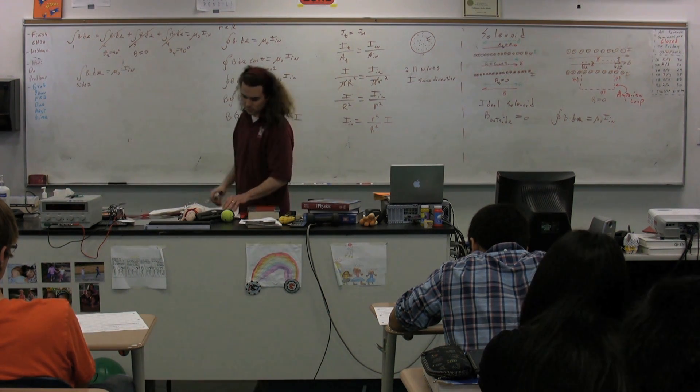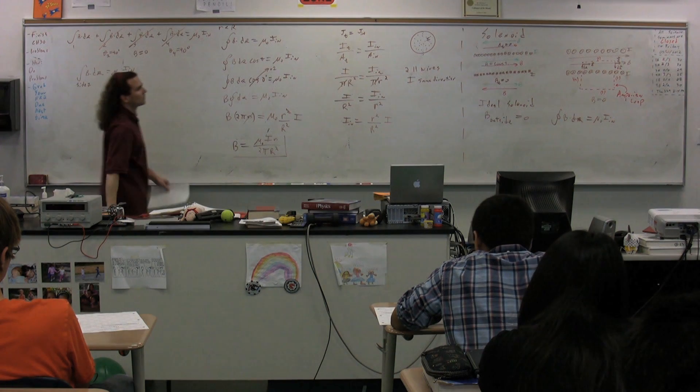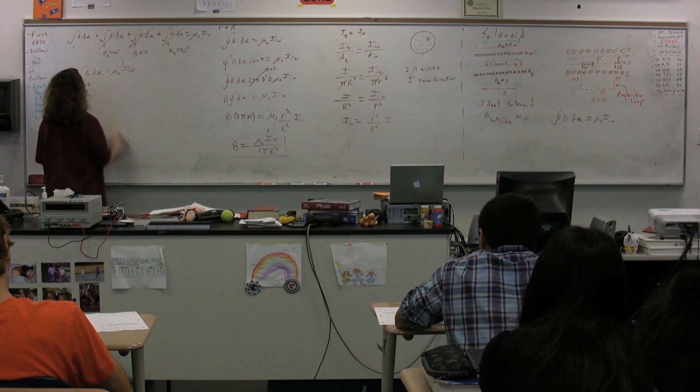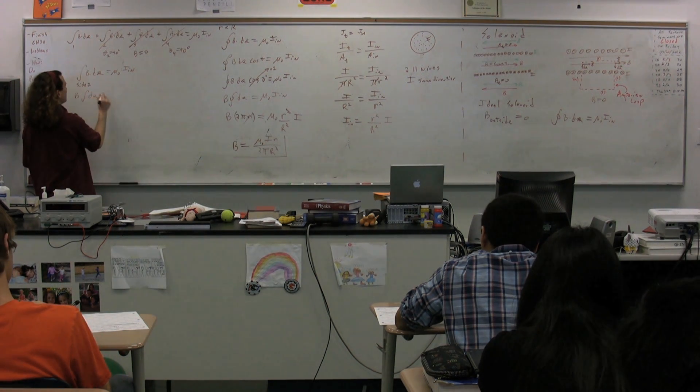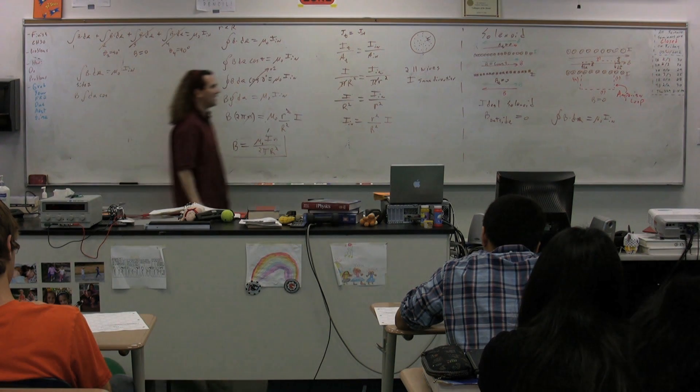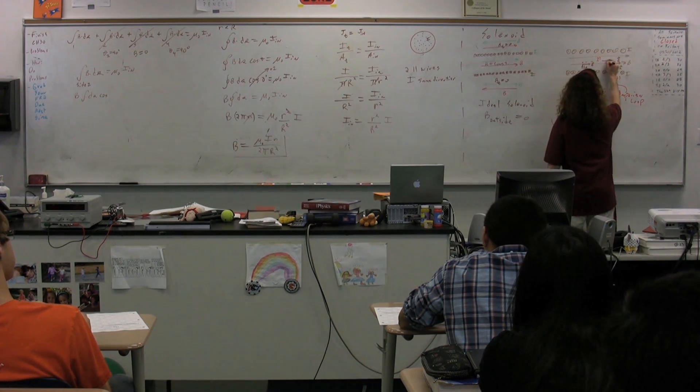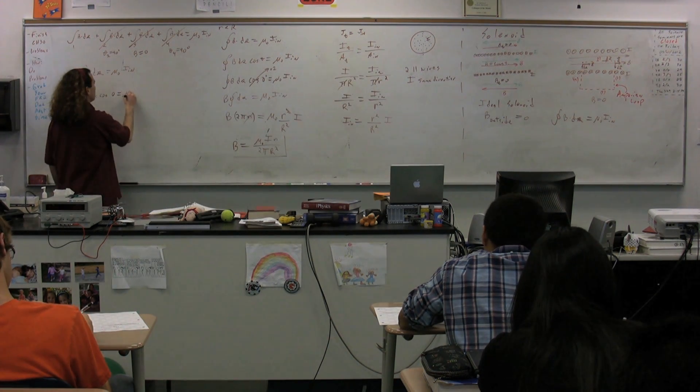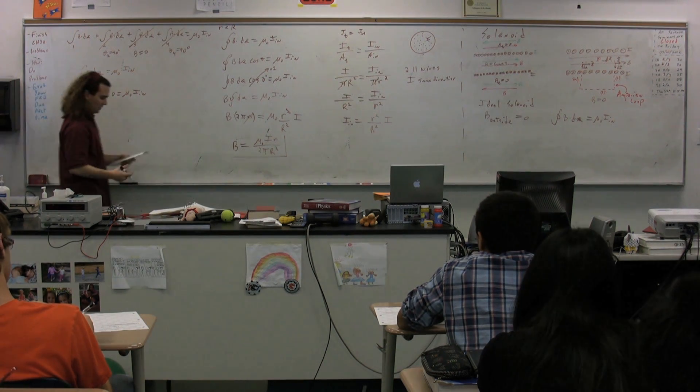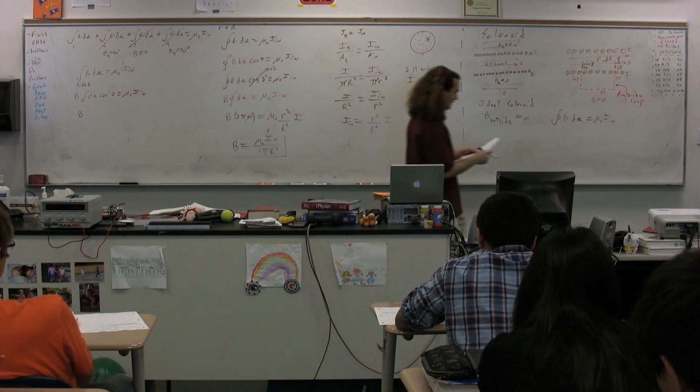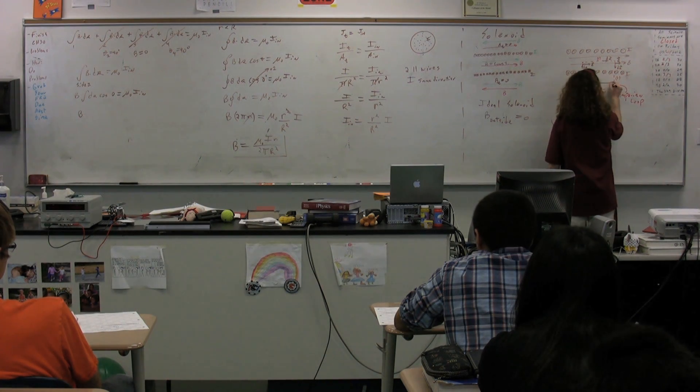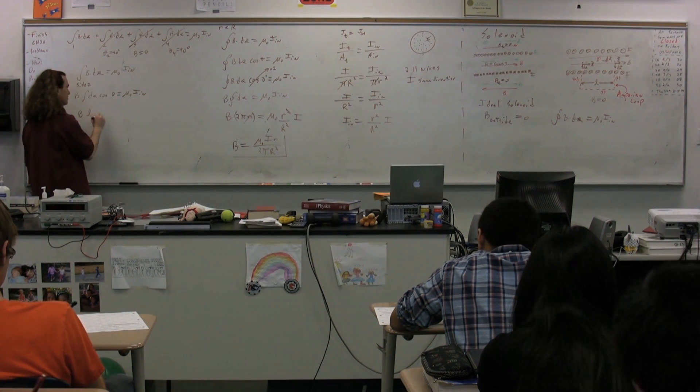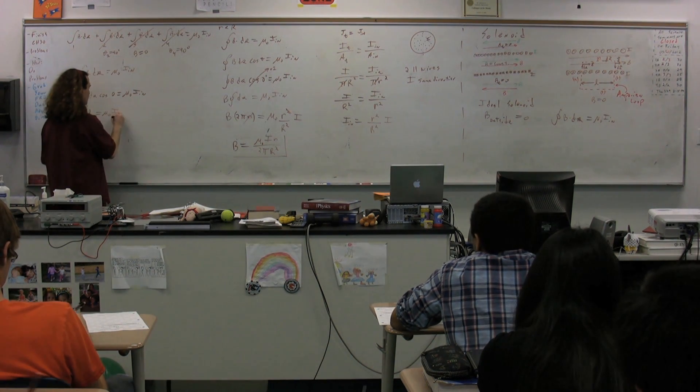So, side one. We already know the magnetic field is constant, so we can bring that out. So B integral ds times the cosine of, and the angle between ds and B is going to be zero degrees. So the cosine of zero is equal to mu naught times the current on the inside. Now, the integral of ds is just going to be the total length of our amperian loop, which is just l. So B times l equals mu naught times the current on the inside.